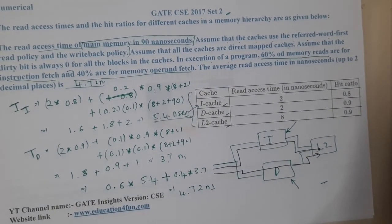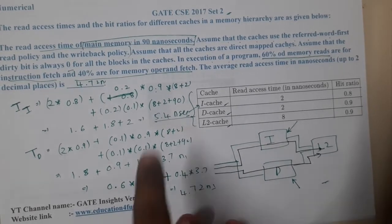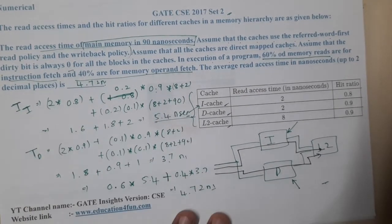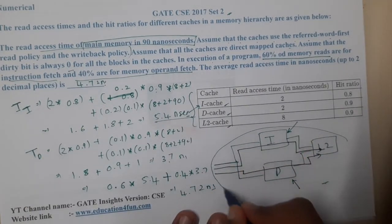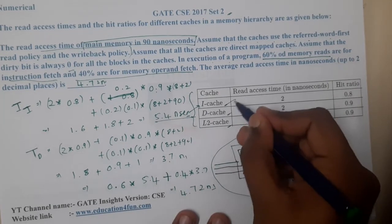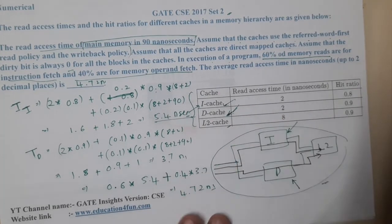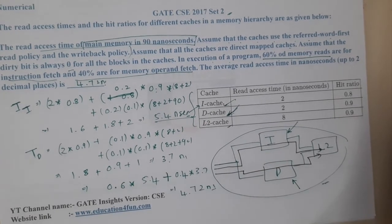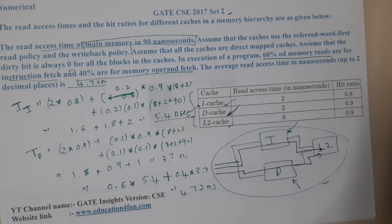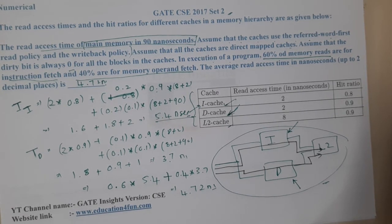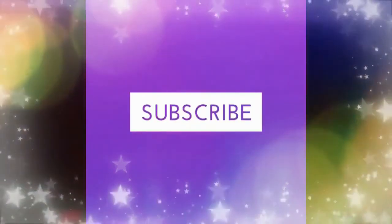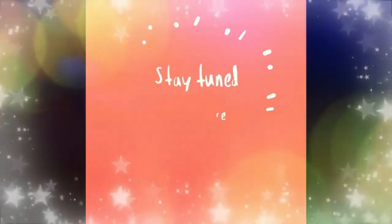This is a straightforward question — you just need to remember the formulas and how to apply them. Whenever they give I-cache and D-cache, remember this two-level hierarchy structure. I hope everyone got a clear idea. In the next lecture we will discuss the next question. Thank you for watching — like, share, and subscribe.